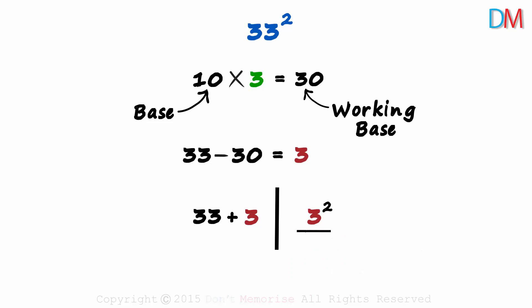So the steps we have seen until now are pretty similar to the ones we saw for the multiples of 10. Find the working base, the difference between the number and the working base, make a partition, write the sum of the number and this difference on the left, and then write the square of the difference on the right.